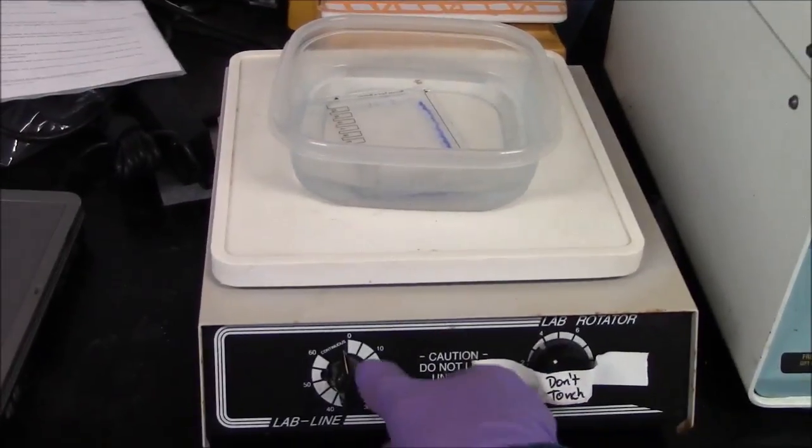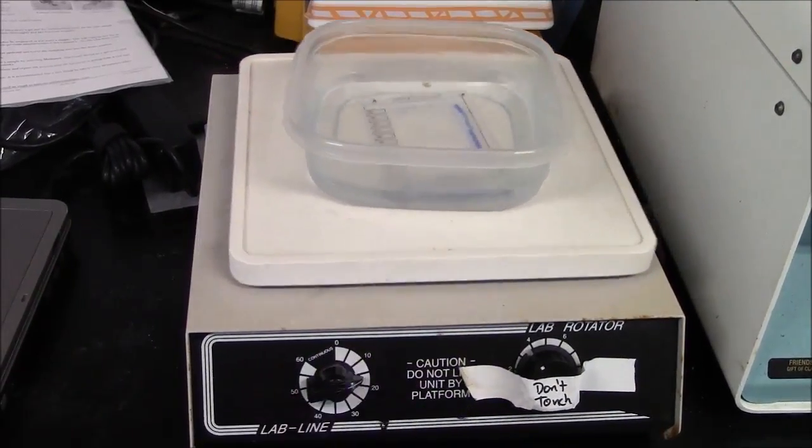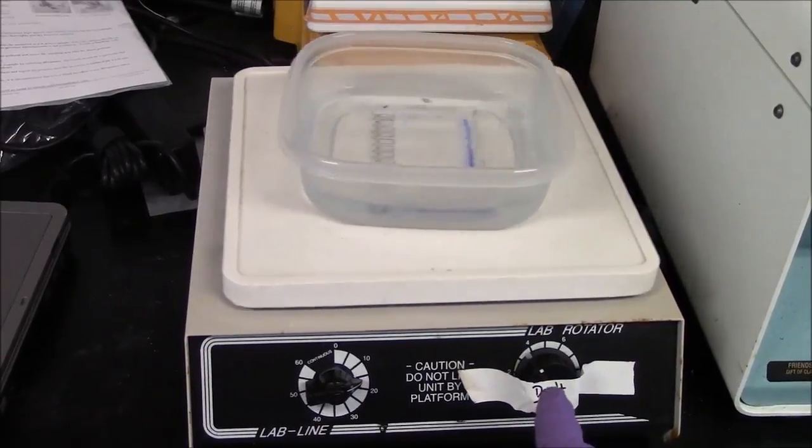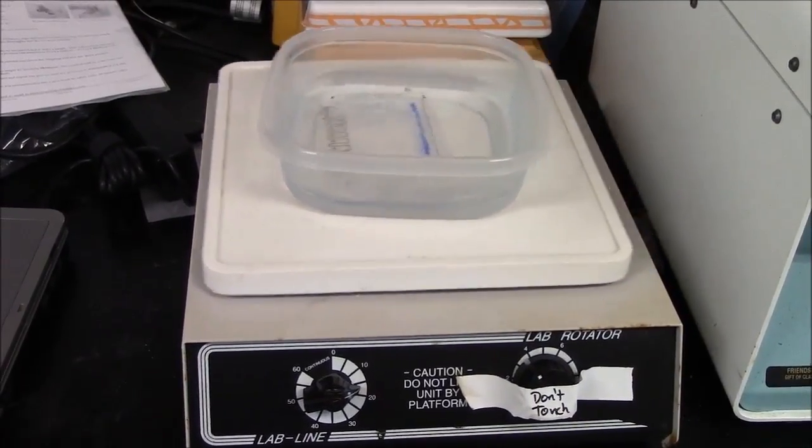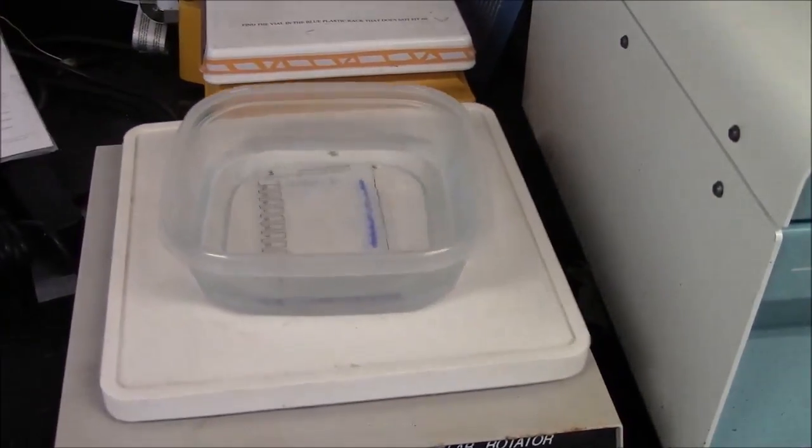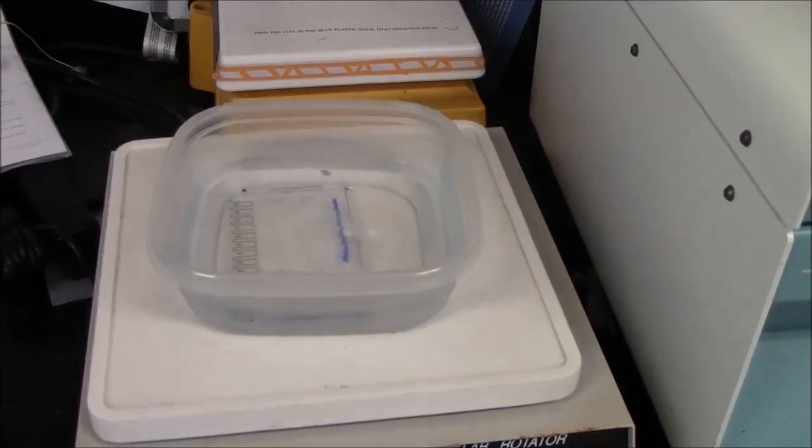So here now we have the gel in a Tupperware tub. This is our rotary shaker. This is a timer function. This is the speed function. As it says, you don't want to adjust the speed. And it will shake gently for about five minutes, and that time we hope that the gel lifts off the plate.